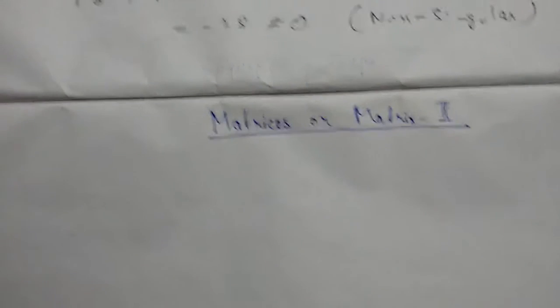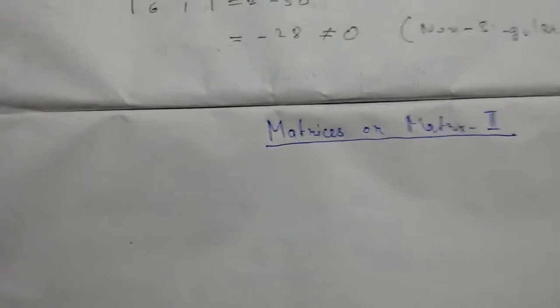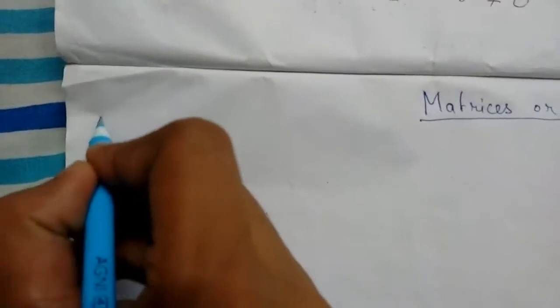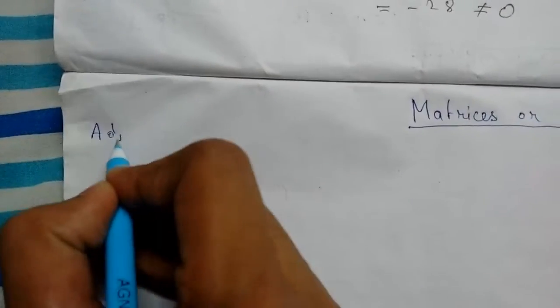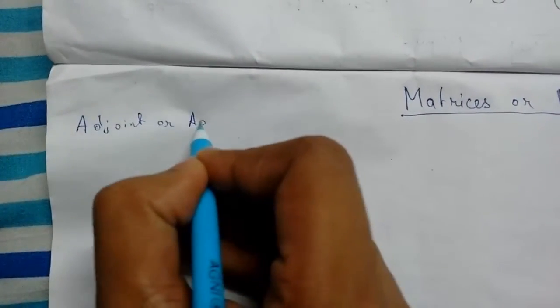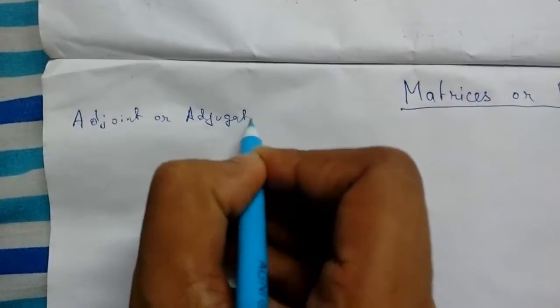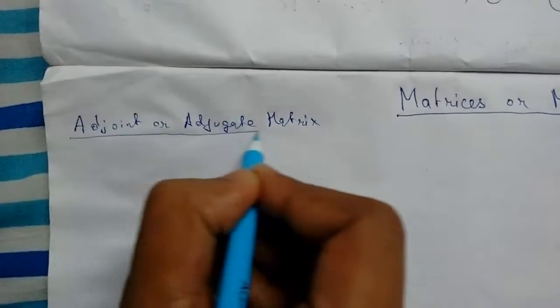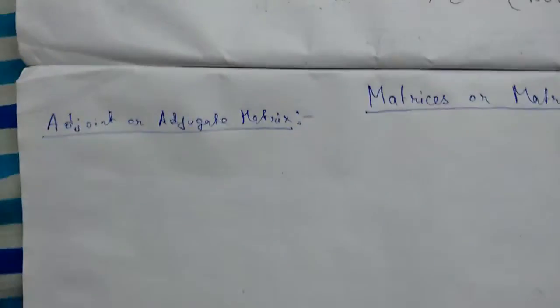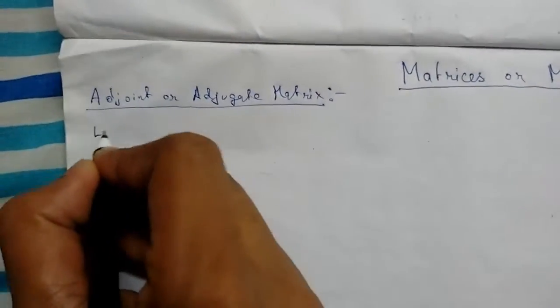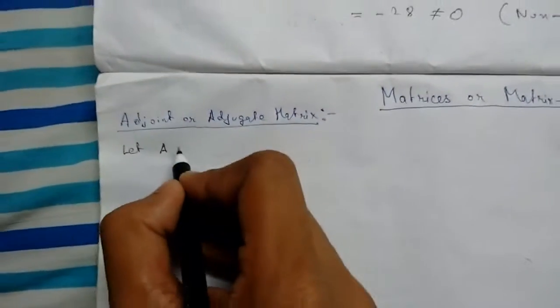Hey guys, today we will be continuing matrices, or Matrix 2. Today we will be starting the adjoint or adjugate of a matrix. Let me write the definition of it.